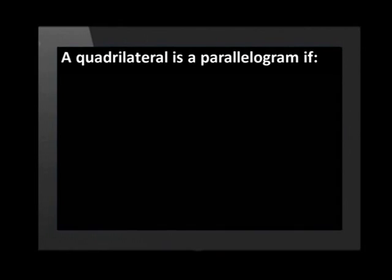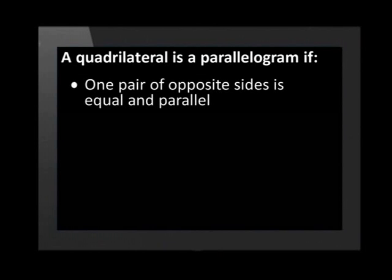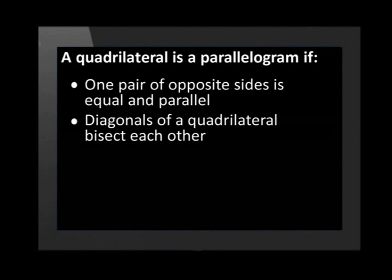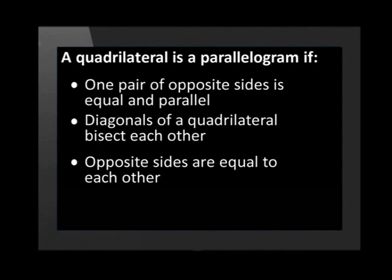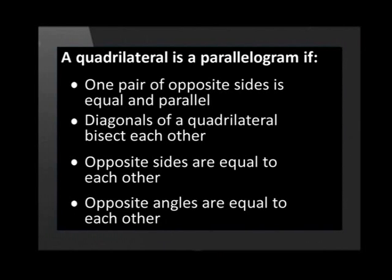To show a quadrilateral is a parallelogram, we need to prove one pair of opposite sides is equal and parallel. Prove that the diagonals of the quadrilateral bisect each other. Prove that the opposite sides are equal to each other. Or prove the opposite angles are equal to each other.